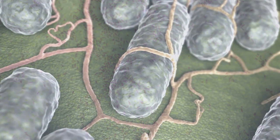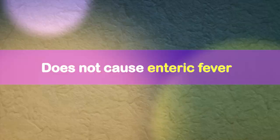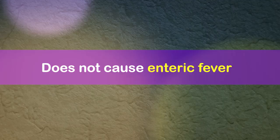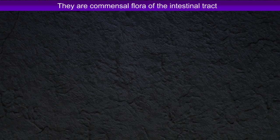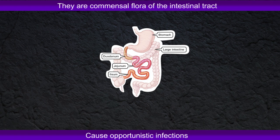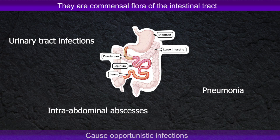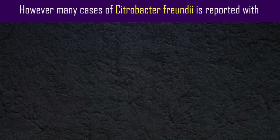The genus Citrobacter is biochemically and serologically similar to those of Salmonella, but does not cause enteric fever. They are common flora of the intestinal tract and cause opportunistic infections such as urinary tract infections, pneumonia, and intra-abdominal abscesses. However, many cases of Citrobacter from the eye are reported, with its association with neonatal meningitis and brain abscesses.